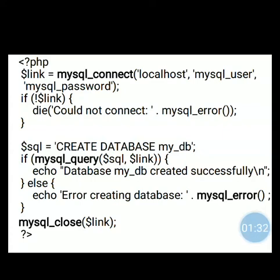The die function is used inside that — 'Could not connect', mysql_error. The die function is very similar to the exit function, but die will exit your program while leaving an error message. Inside die, mysql_error is used, so mysql_error will give a proper error message explaining why the connection was not established. If the link is established, the following code will get executed.